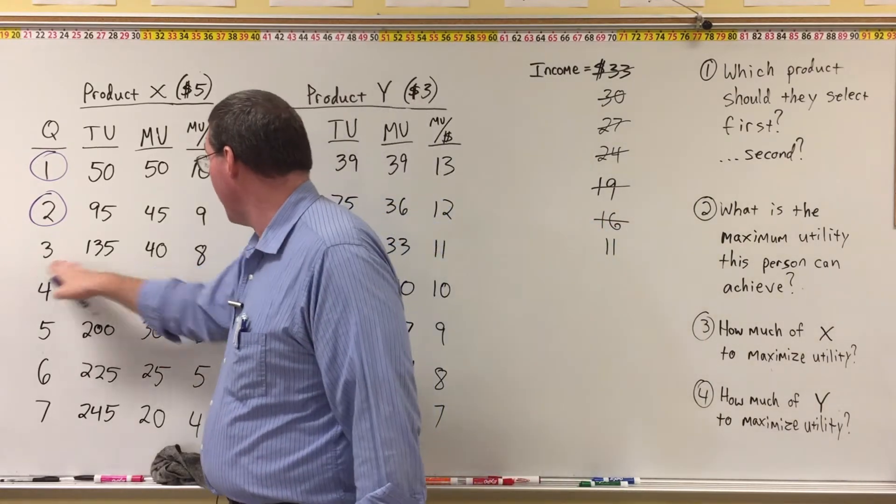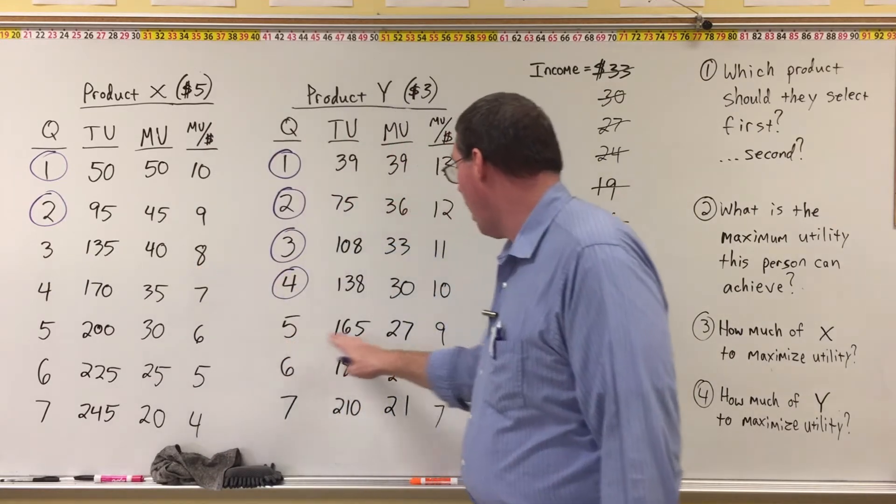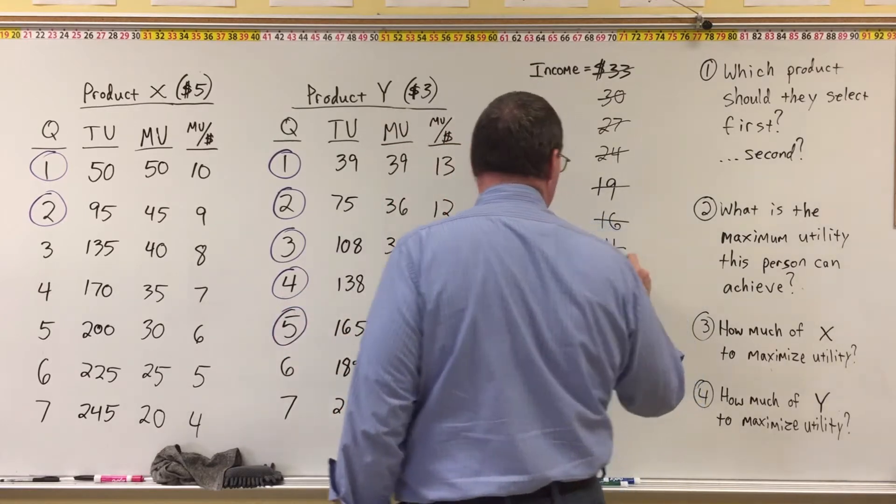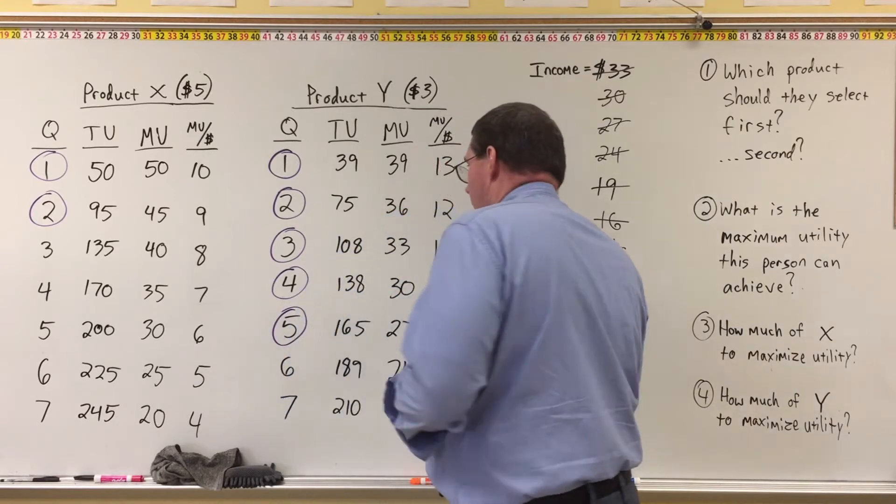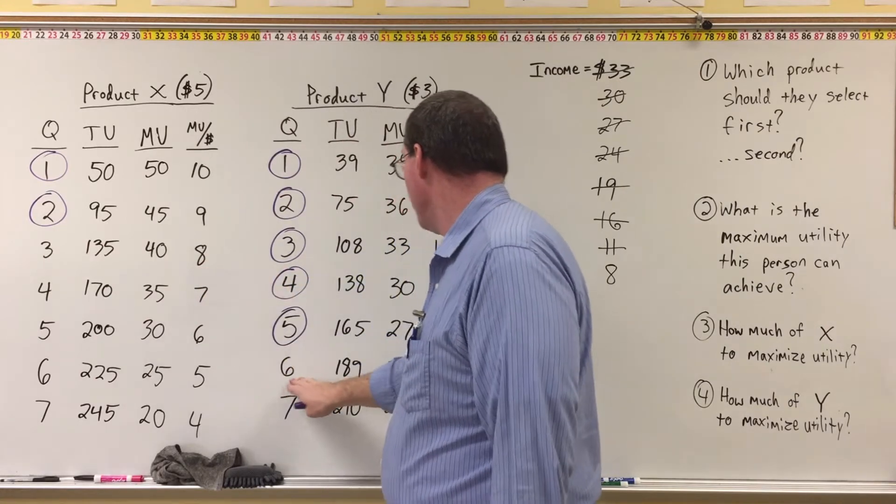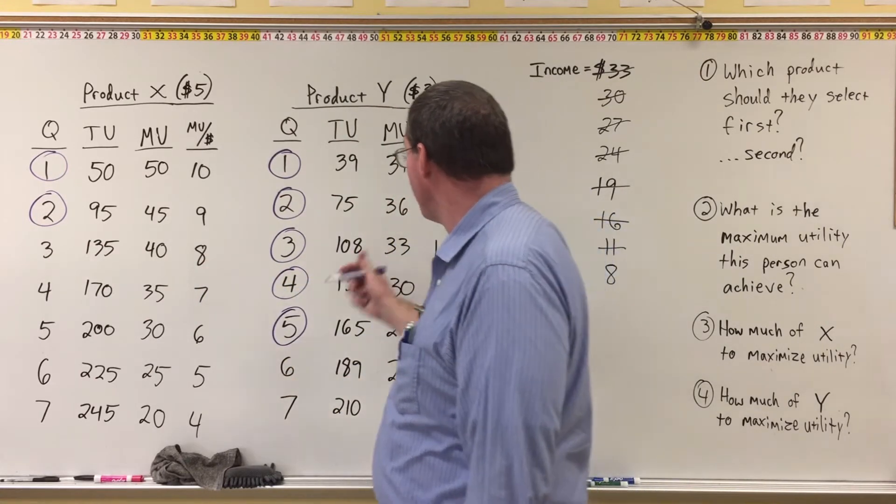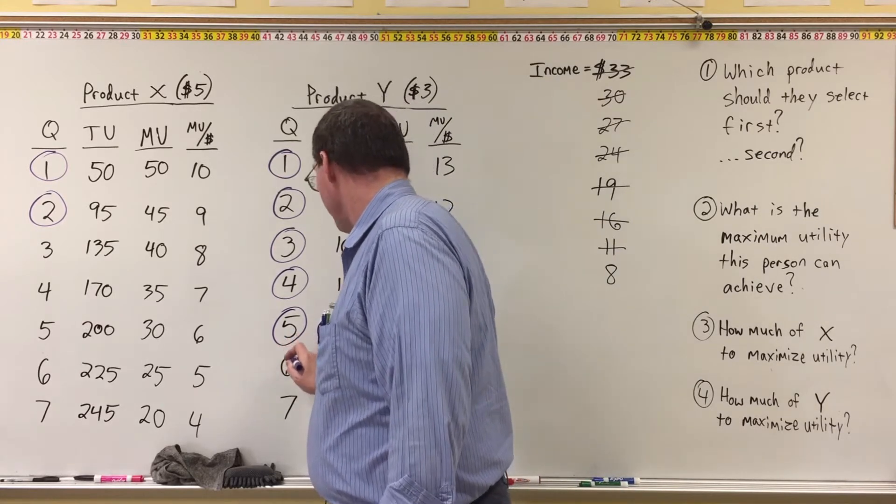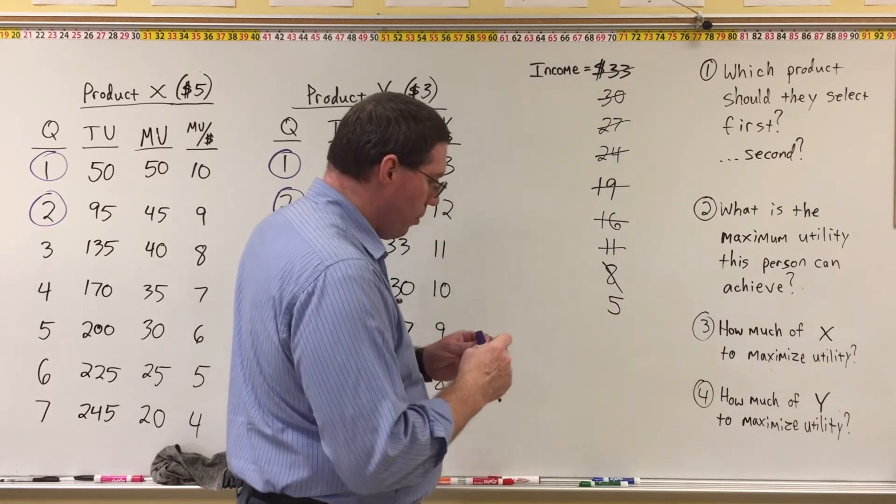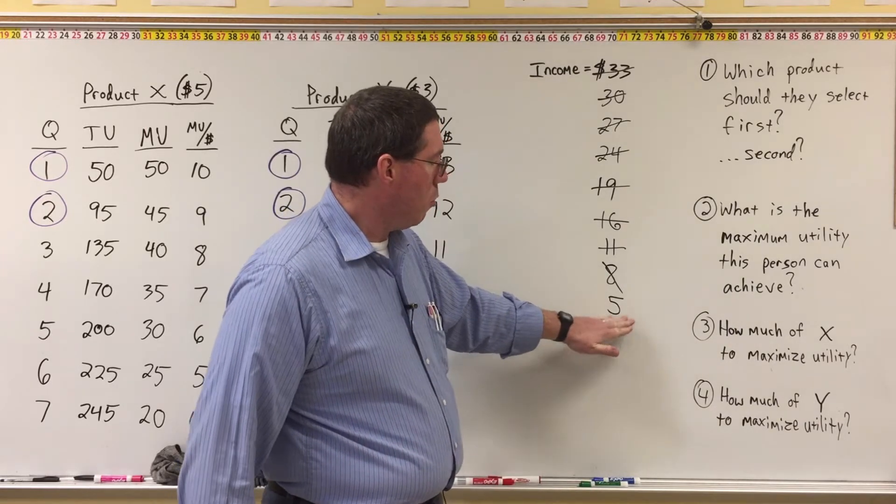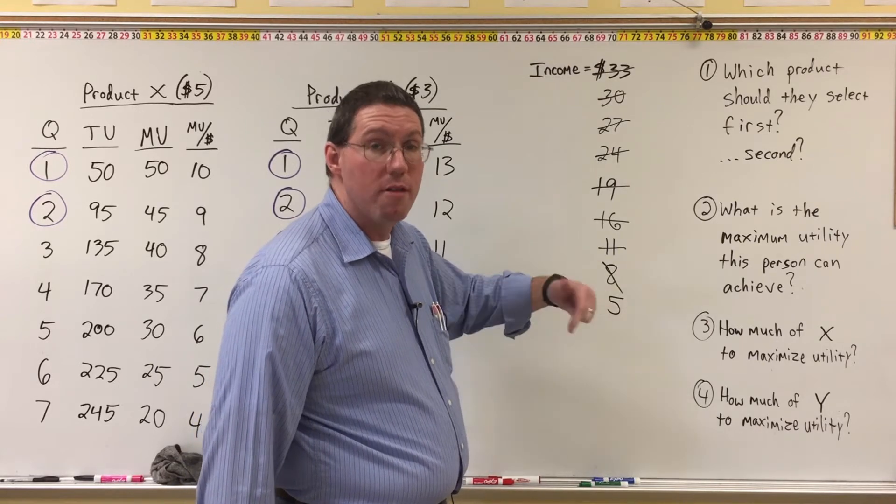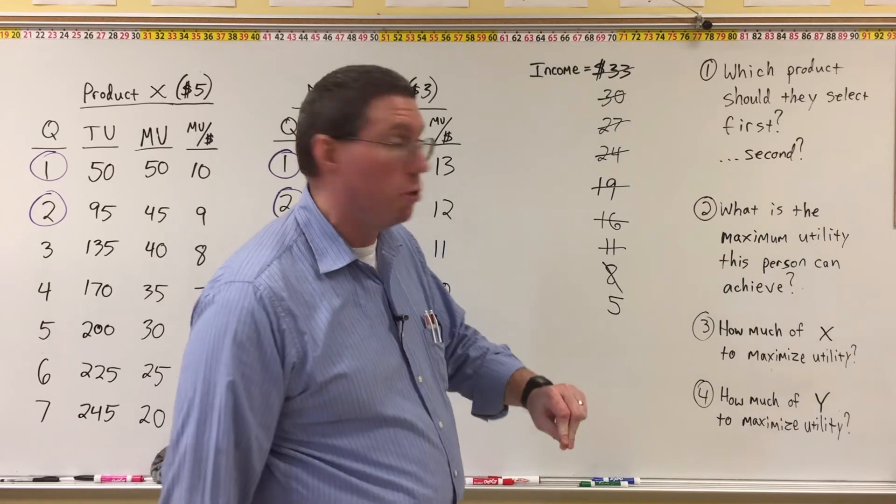Now for the next unit, the third unit of X, which is 8, to the fifth unit of Y, which is 9. So we're going to pick the fifth unit of Y, and that costs 3, so that's going to bring us down to $8. And now we're going to compare the third unit of X to the sixth unit of Y. Both of them are 8. This time I'm going to go with the sixth unit of Y, and that costs $3. So our $8 is going to come down to $5, and so now we can either buy one X or one Y. We can afford one X, we can afford one Y with this $5, so this next unit that we choose is going to be the last unit that we choose because we're running out of money.